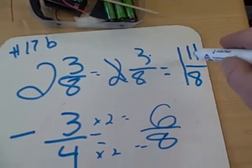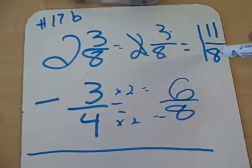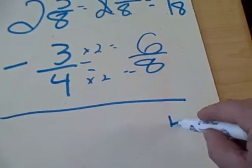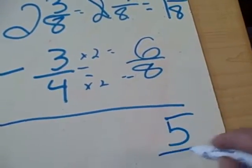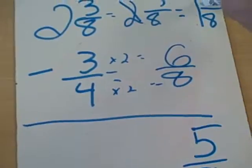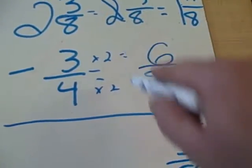Now we can do this problem. So we're going to do 11 eighths minus 6 eighths. But don't forget that 1 minus 0 is 1.